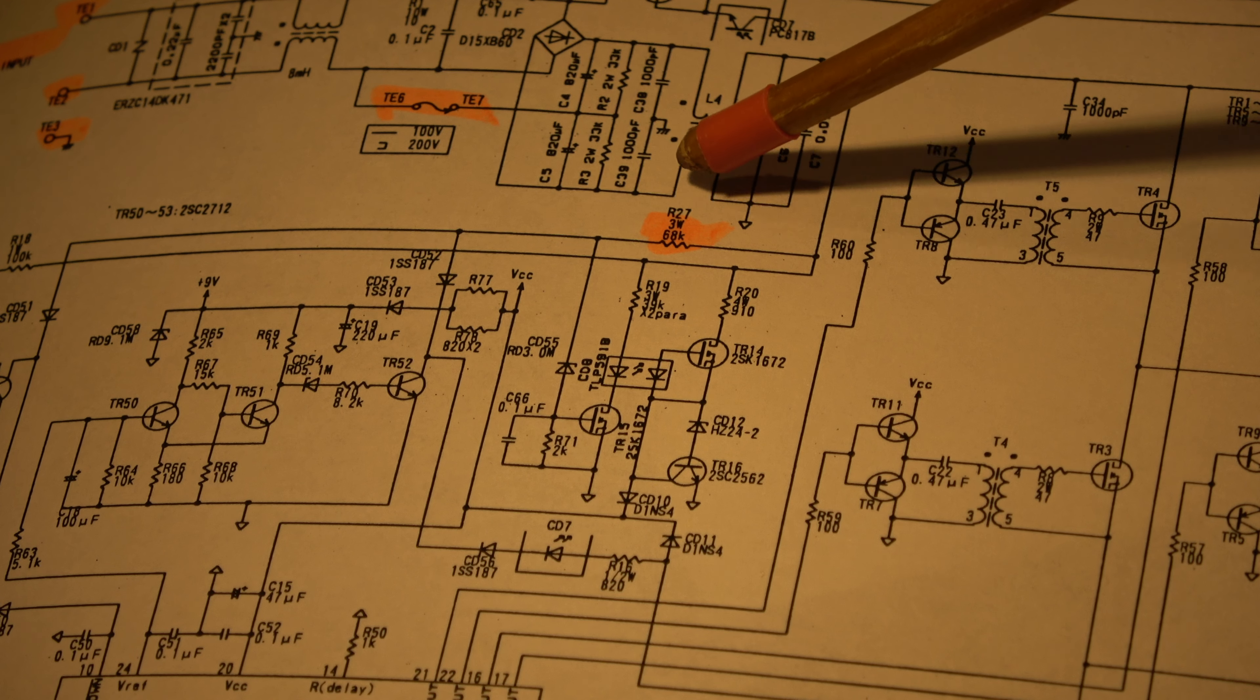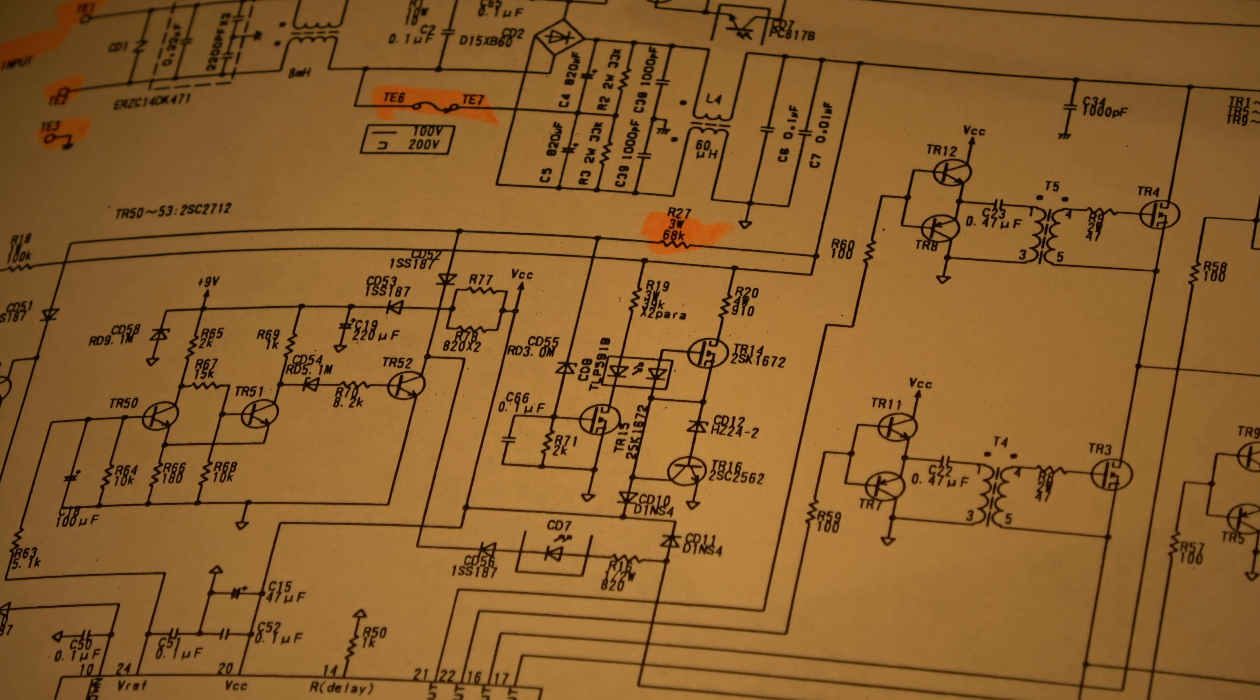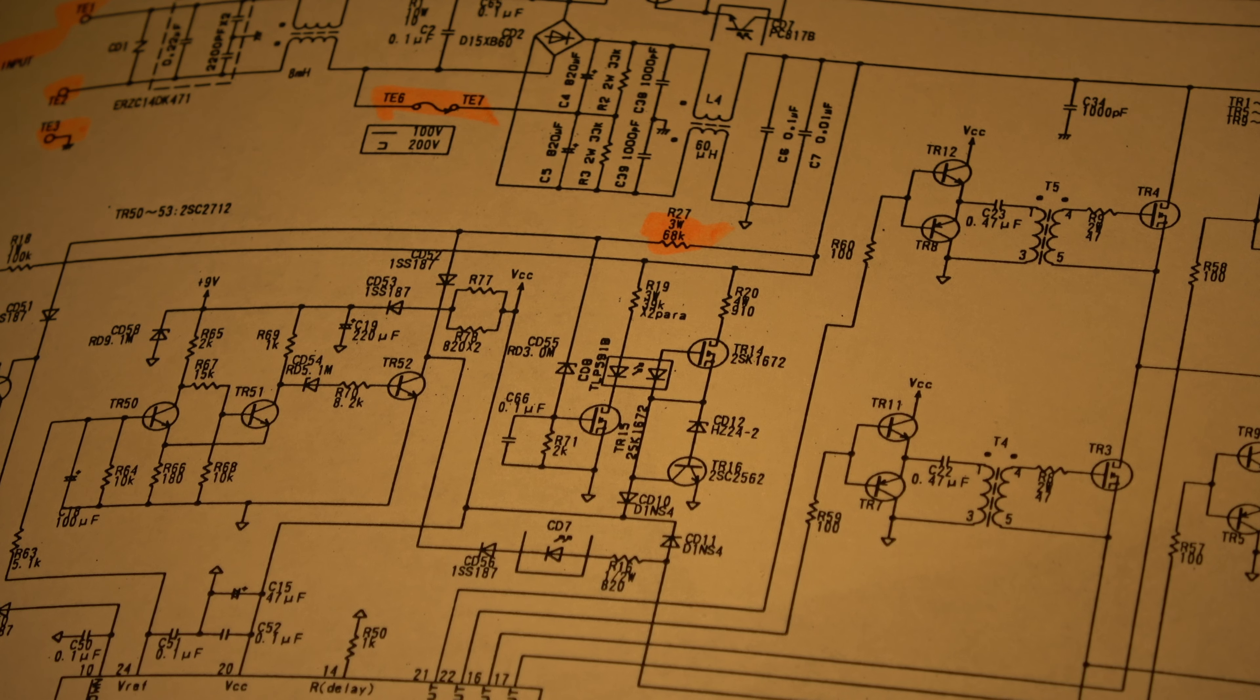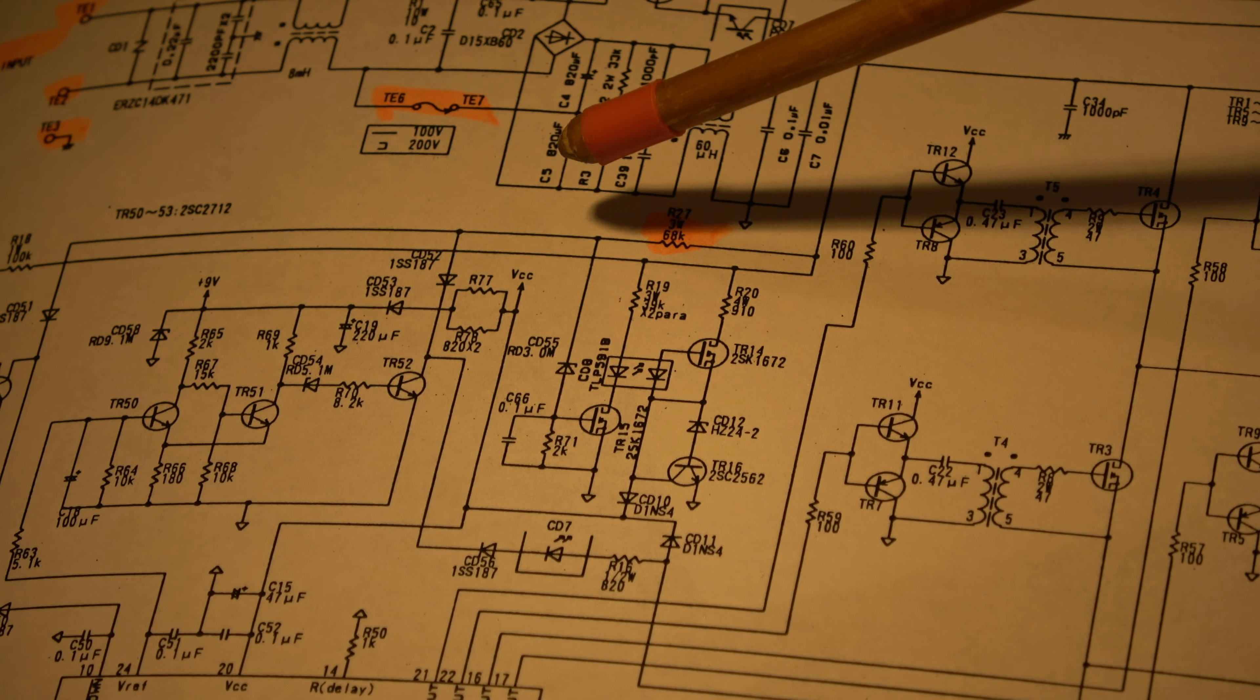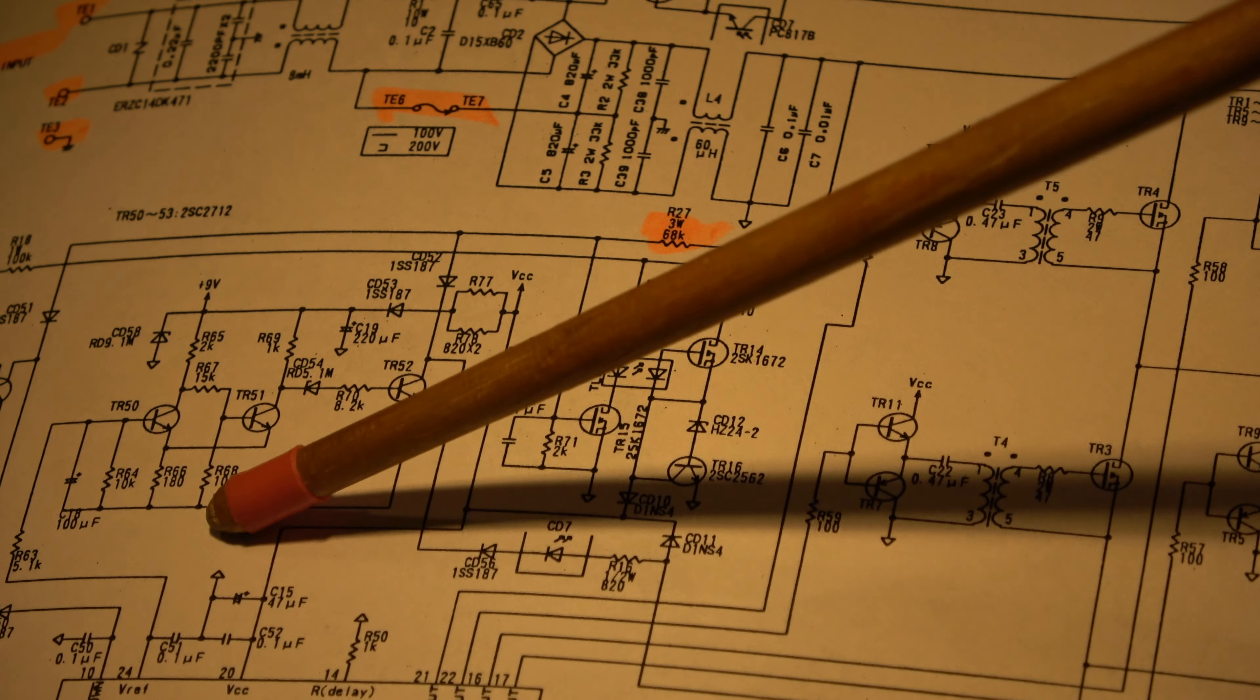The resistor which gets so hot is this one, R27, 68k and three watt. On one side it's connected to the rectified mains voltage. In our case we have 230 volt or so, and the peak voltage with this rectifier and the filter caps is 320 volt or so. 320 volt, 68k, it's roughly 1.5 watt permanent power. Okay, it's within the specified three watts, but I don't think that this is really a three watt resistor. It looks a little bit smaller.